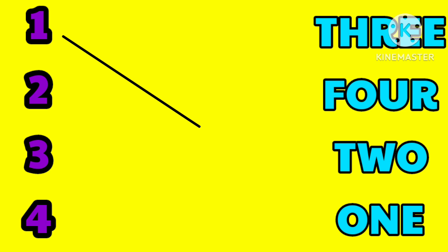Here are numbers 1, 2, 3, 4. Let's match with their spelling. 1, O, N, E, 1. This is 2, T, W, O, 2.